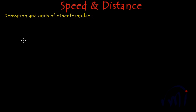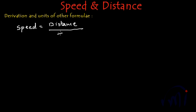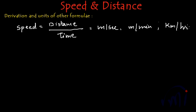In the last video we derived the formula for speed. The formula we reached was: speed is equal to distance divided by time. The units for speed were meter per second, meter per minute, or kilometers per hour. When talking in terms of hours, the distance in meters would be very long, so we convert that into kilometers and write it as kilometers per hour. These three are the most frequently used units.